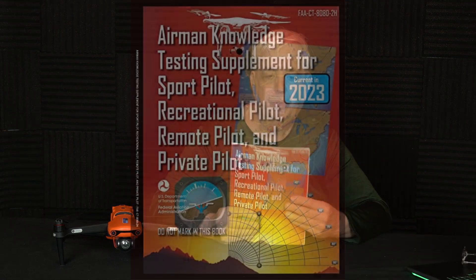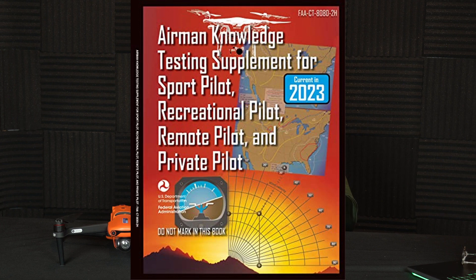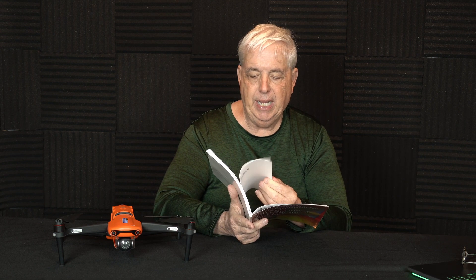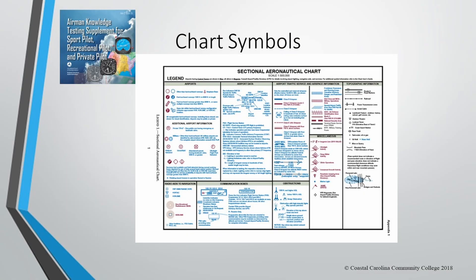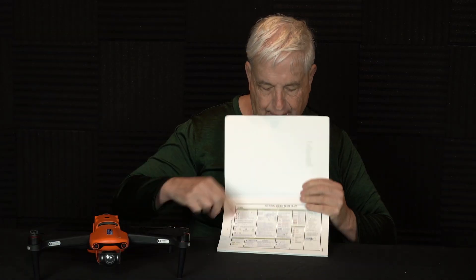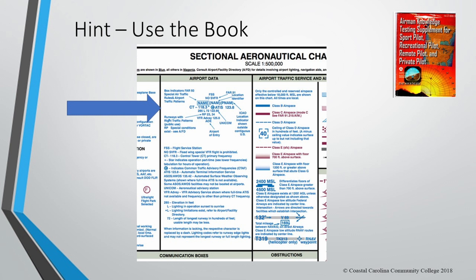Throughout this lecture series I've asked you to buy this book. One of the things is that this book is in the test room with you. I send you to page 11, which is Appendix 1. In this area you're going to see how to interpret the information surrounding an airport and what each of these symbols and numbers mean. So if they ask you what is the control tower frequency, what is the AWOS frequency, is it a manned tower or unmanned tower — all that information may be found in that figure on page 11 in this book.